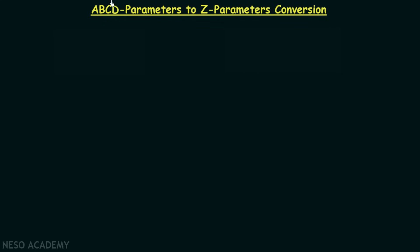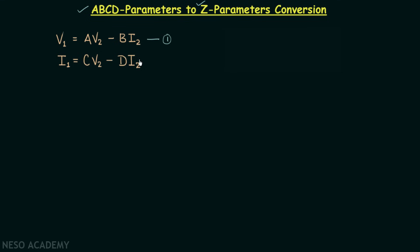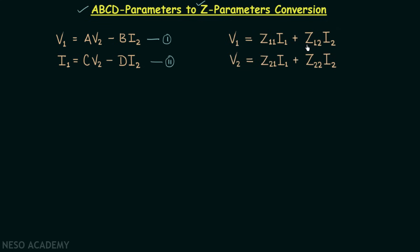In this presentation we will convert ABCD parameters to Z parameters and Z parameters to ABCD parameters. We will first perform the conversion of ABCD parameters to Z parameters. I have taken the set of equations we have for ABCD parameters — equation 1 and equation 2 — and also the set of equations for Z parameters — equation 3 and equation 4.